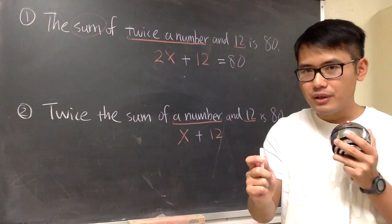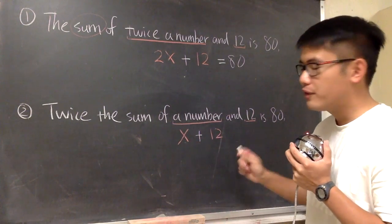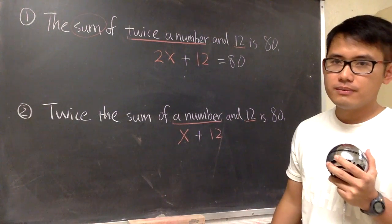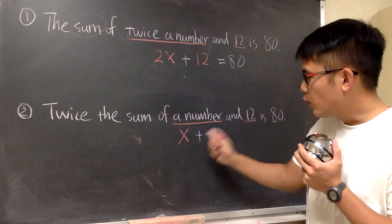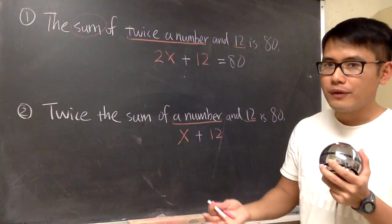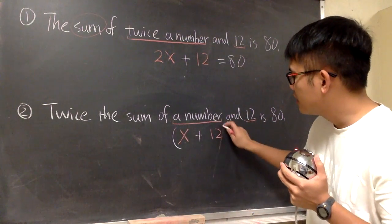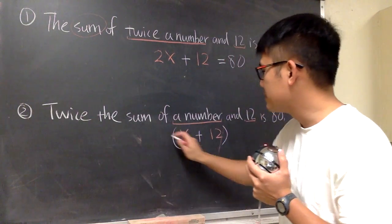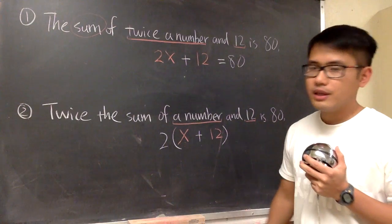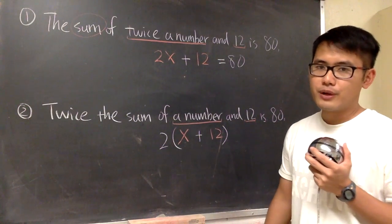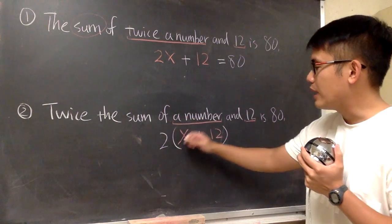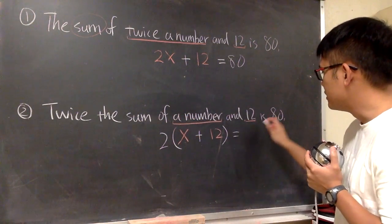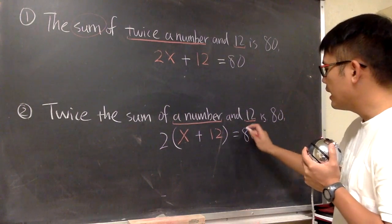But be sure, you have to indicate that we are adding this part first. x plus 12 shall be the first operation. In this case, in order to force this to be the first thing that we have to do, is to put that in a parenthesis. At the end, we do two times the whole parenthesis. Two times the sum, okay? And we have to figure out the sum first. That's why we have to put this in a parenthesis. At the end, of course, this is equal to 80.